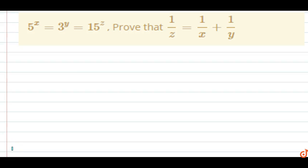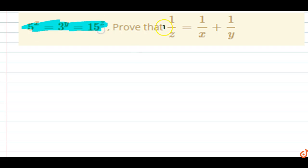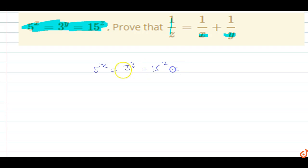In this question, 5 power x equals 3 power y equals 15 power z. We need to prove that 1 upon z equals 1 upon x plus 1 upon y. We know that 5 power x equals 3 power y equals 15 power z, so let this whole number equal k.